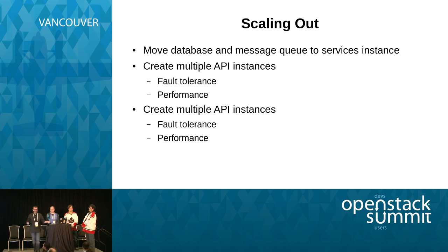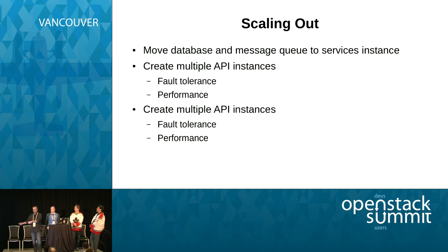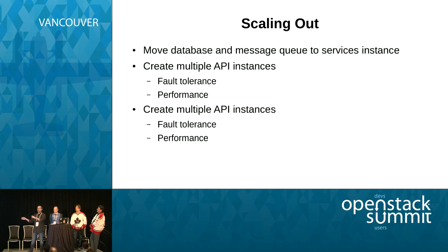Now we get to scaling out. This is one of the sections in the user guide. We take the original all-in-one application and figure out how to make it more scalable. We move the database and message queue services to their own instance. Then we look for stateless components that are easily replicated — we can have multiple API instances because they just take requests and put them on the work queue, and multiple worker instances. They can do fractal generation in parallel — it's much more performant and fault-tolerant. If you kill a worker, you might lose one fractal in progress, but you don't lose the ability to create new fractals.